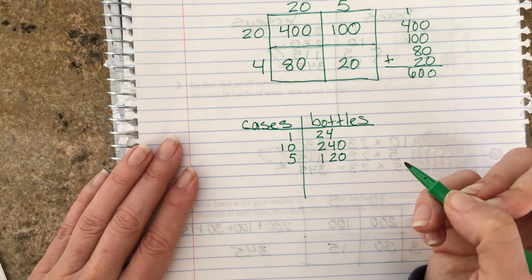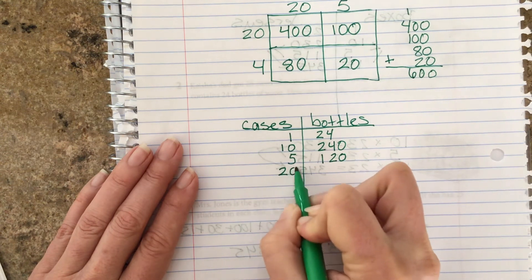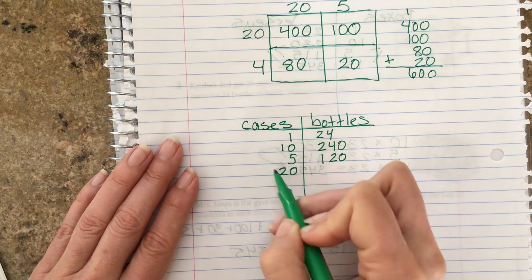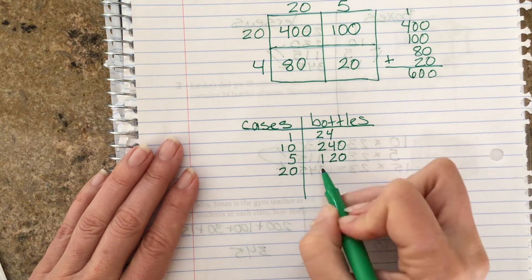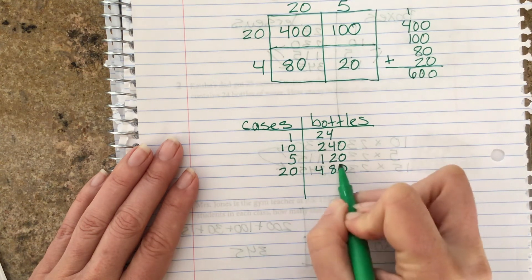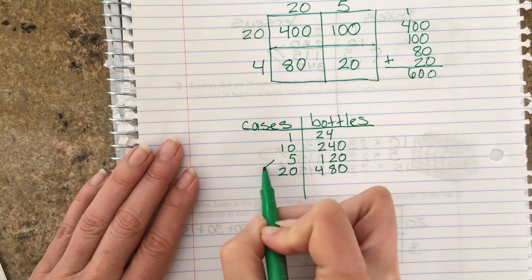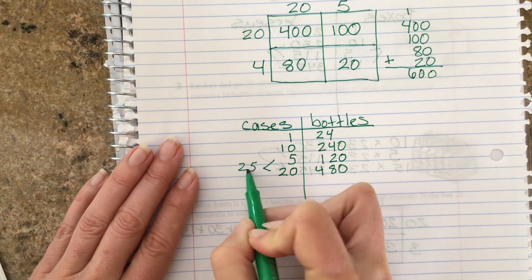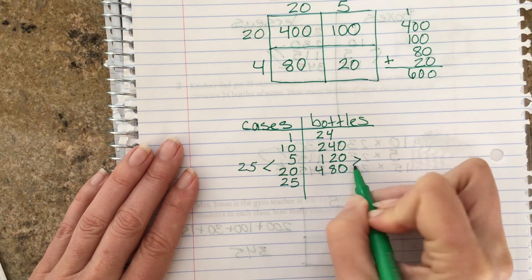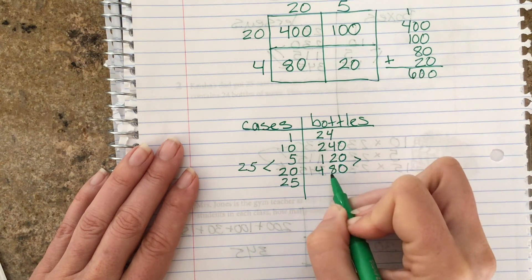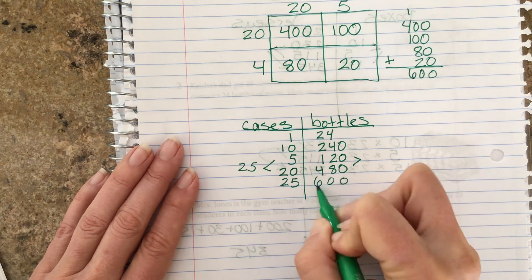Hmm, are we there yet? How about 20? If I double the 10, I get 20, so I'm going to double the 240 for this side: 480. If I add these together, that's going to give me 25, so I would add these together: 120 plus 480 is 600.